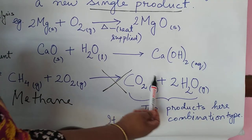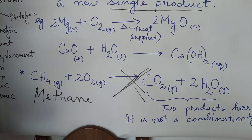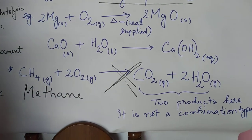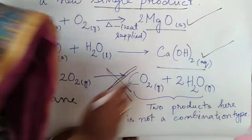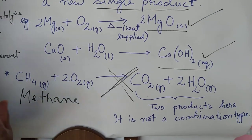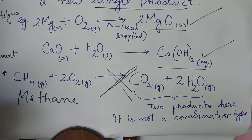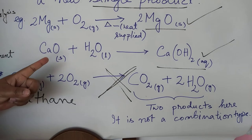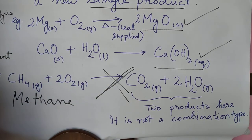That's why this type of reaction is not considered as a combination type. But why the above two examples are combination type? Because they have only one single product. So this is how you can classify it or you can distinguish out of many reactions. What is a combination type? For combination type, you will always try to find out the single product type of reactions.